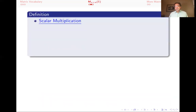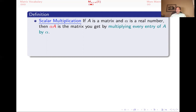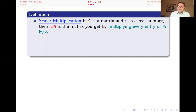How does scalar multiplication work? If A is a matrix and alpha is a real number, then alpha times A is obtained by multiplying every entry of A by alpha — the scalar gets multiplied by every entry. Note that multiplying just one row by a constant, as in elementary row operations, is not scalar multiplication — that's a different kind of operation.